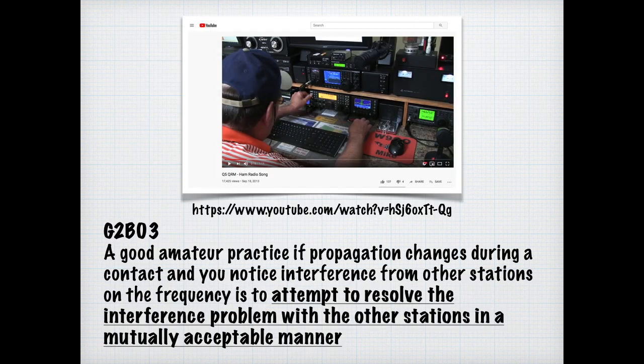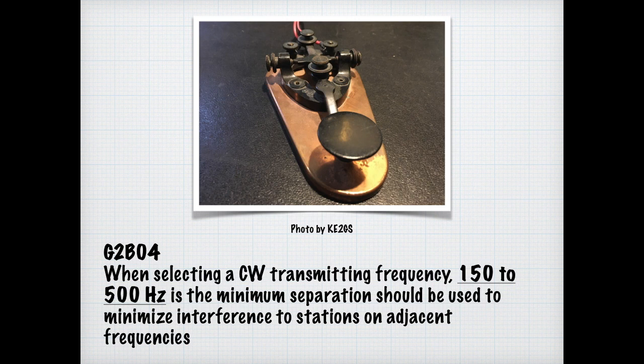Propagation can change at the drop of a hat. If you notice interference from other stations on your frequency, for the exam you need to know to attempt to resolve the interference problem with the other station in a mutually acceptable manner — don't get into arguments. Because CW has such a narrow bandwidth, you only need 150 to 500 hertz of separation. Know for the exam that 150 to 500 hertz is the minimum separation used to minimize interference on CW.